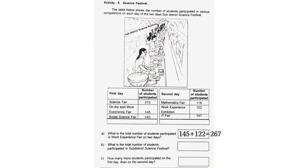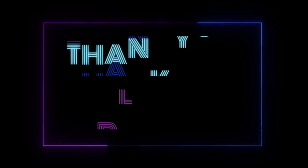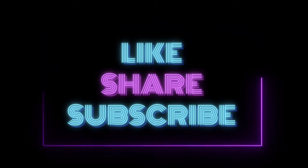B. Total students in the sub-district science festival: First day 500, Second day 387. 500 + 387 = 887. C. How many more students participated on the first day than the second day? 500 - 387 = 113. Thank you. Please like, share, and subscribe for more updates.